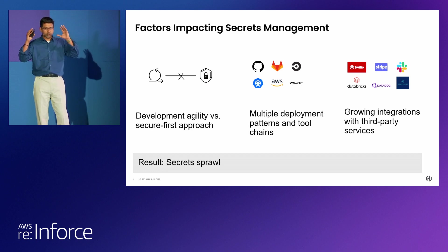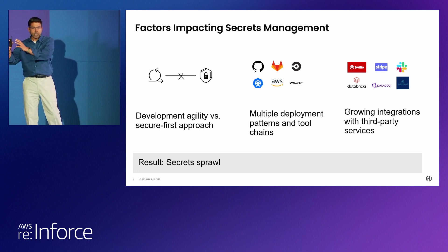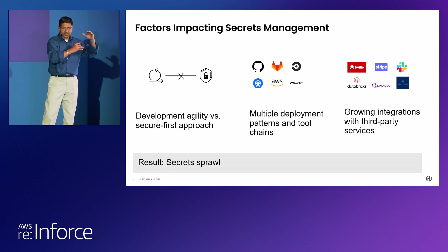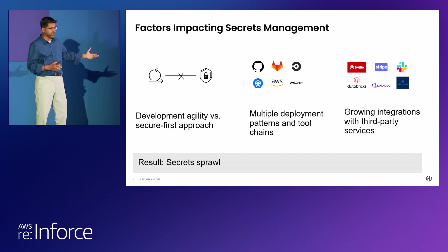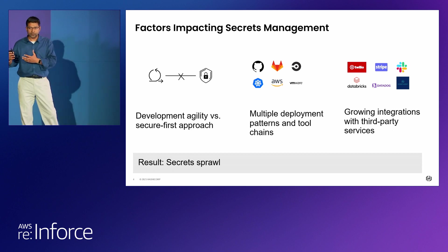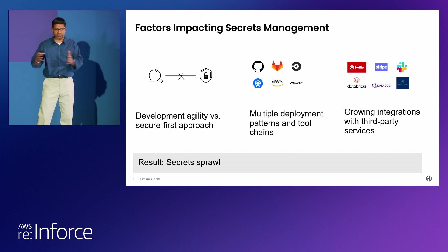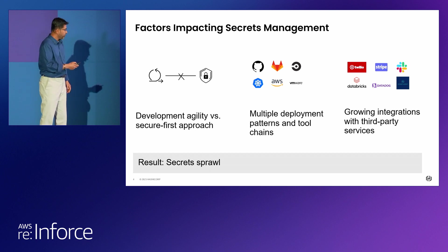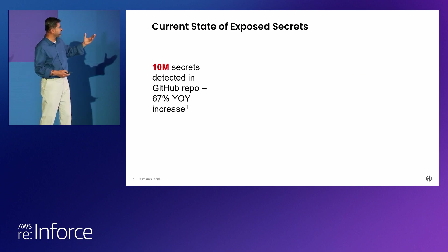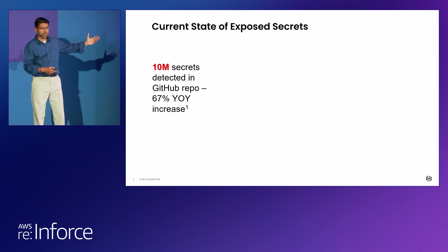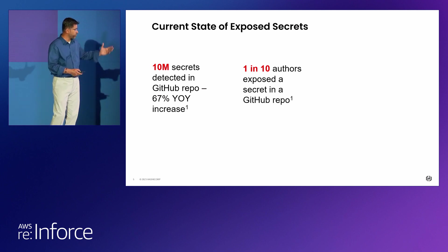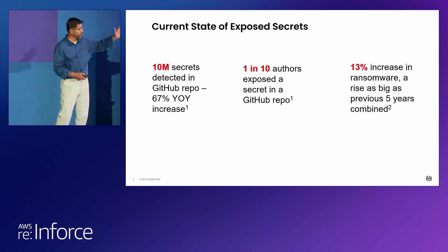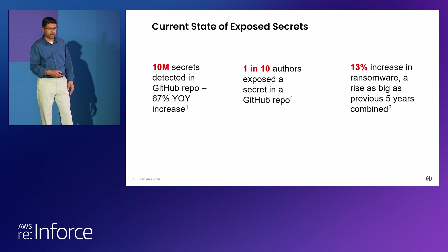Let me reiterate: more toolchains, more endpoints to authenticate and authorize, more and more localized secret stores. All these in combination create secret sprawl. Part of the problem is going back to development agility versus secure first — developers don't have the luxury to think about viewing all the audit logs. They have to go to all these different tools to look at their audit logs. If you take this in combination with what's happening in the market: 10 million secrets were exposed in GitHub repos last year, 67% year-over-year growth. 1 in 10 authors exposed a secret in a GitHub repo. Net-net, there's a 13% increase in ransomware — too high compared to previous years.